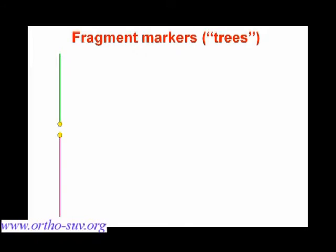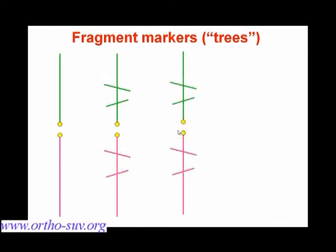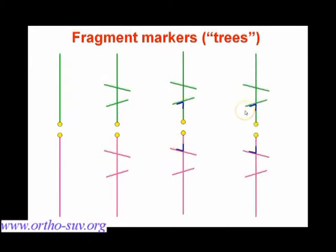Let us divide the trees into parts. Each tree has an axial line — you see the green line for the proximal fragment and the pink line for the distal. At their ends, they have yellow points marking the borders of the fragments. Each tree also has two horizontal lines, which can be placed oblique, and the second line, called the second centrator, has a blue angle.